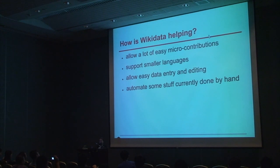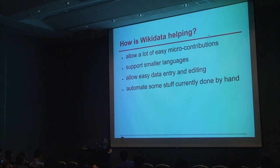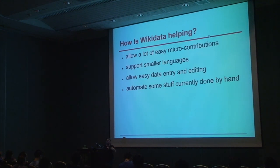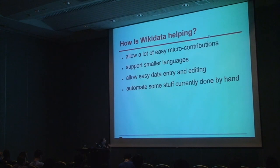So how does Wikidata help with Wikimedia's programs? It allows a lot of micro-contributions — you can just translate a small thing or enter a source for a statement. These are all really easy things that you can do in a few minutes. This hopefully helps get more people involved in doing a lot of small things, instead of having to write a whole article on Wikipedia, which is really long for some people.